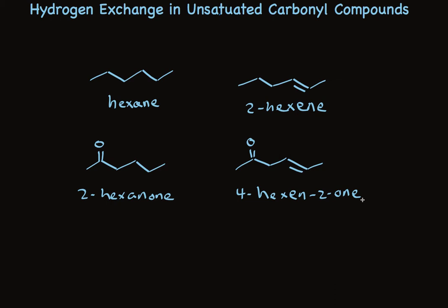In common nomenclature, we sometimes specify where the double bond is by using the alpha-beta-gamma terminology. A carbon next to the carbonyl is called alpha. The carbon further along is beta. The carbon next is called gamma. So this is a beta-gamma unsaturated ketone.